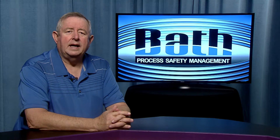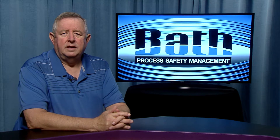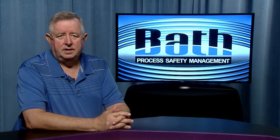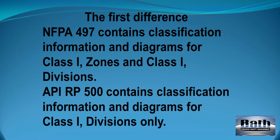The first difference is that NFPA-497 contains classification information and diagrams for Class I zones and Class I divisions, whereas API-RP500 contains classification information and diagrams for Class I divisions only.